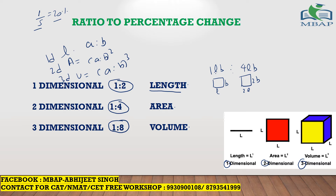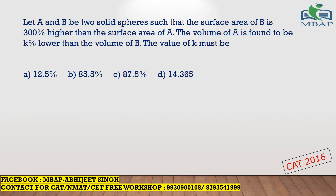With this application we can solve all difficult geometry questions in your CAT exam in seconds. Here's a question: let A and B be two solid spheres such that the surface area of B is 300 percent more than the surface area of A. The volume of A is found to be k percent lower than the volume of B. Find the value of k. What is given: two spheres A and B, something about their area, and we need to find something about their volume.